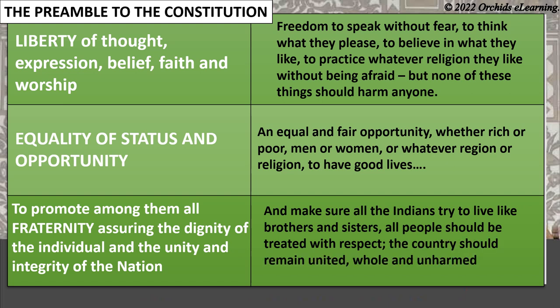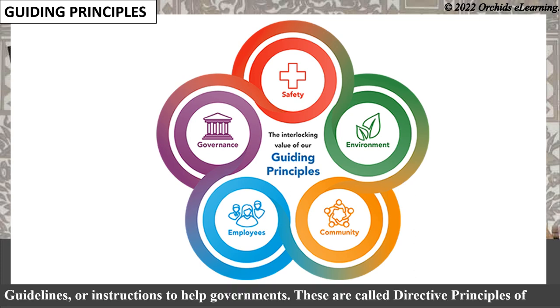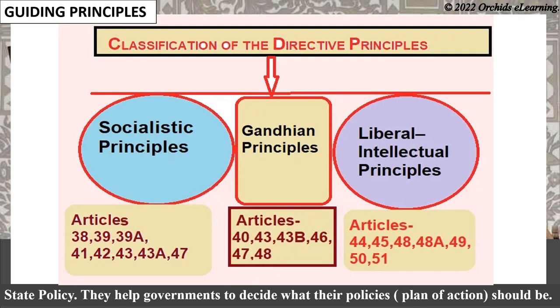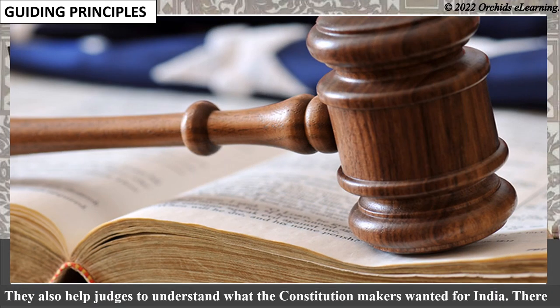The country should remain united, whole, and unharmed. To make sure that the ideas of the preamble are put into practice, the constitution has guidelines or instructions to help governments. These are called directive principles of state policy. They help governments to decide what their policies and plans of action should be. They also help judges to understand what the constitution makers wanted for India.